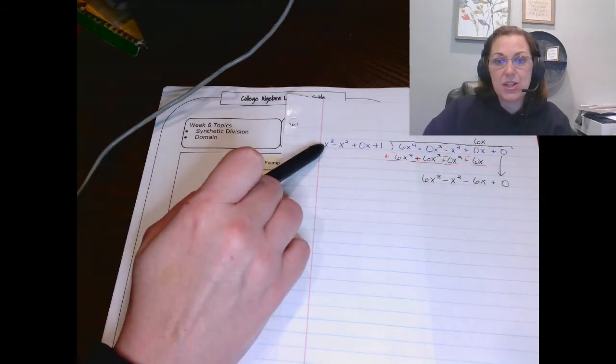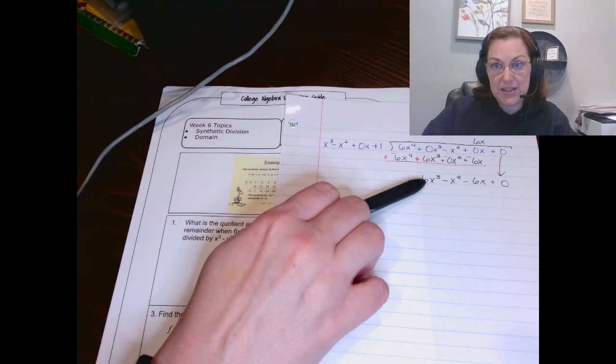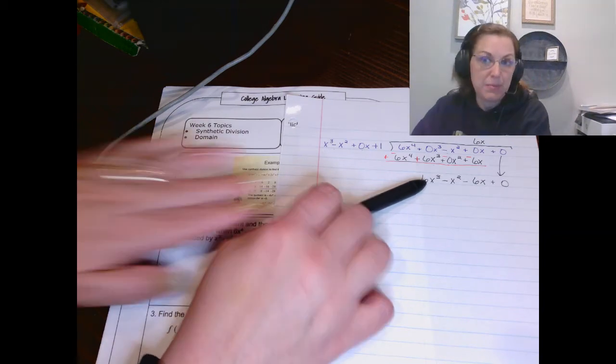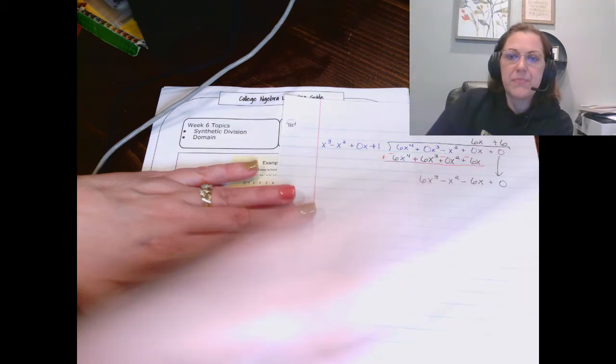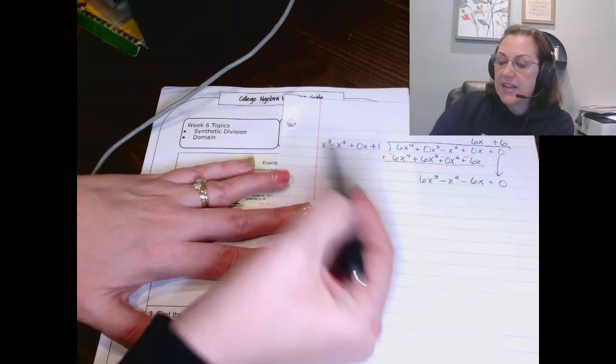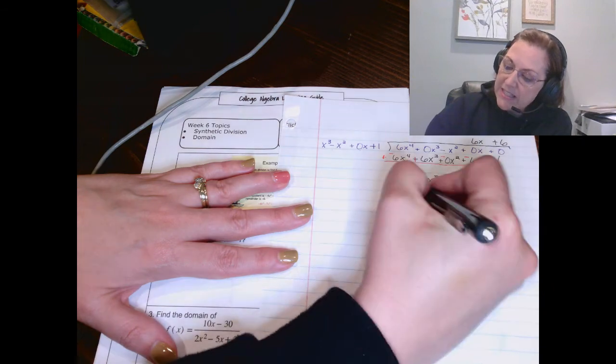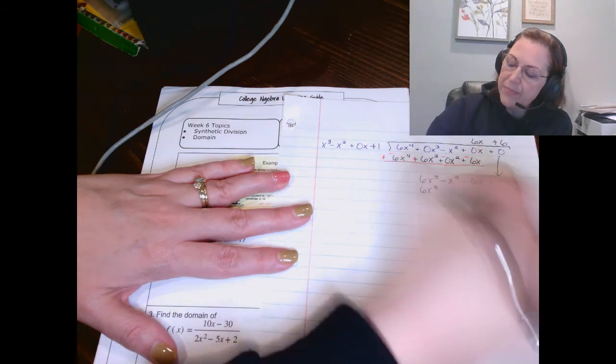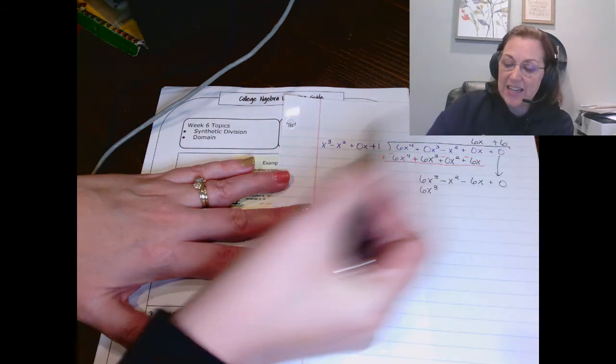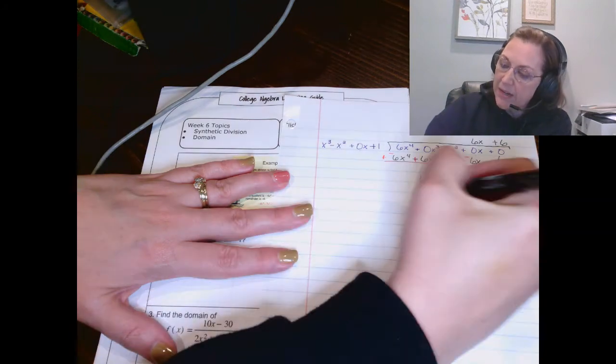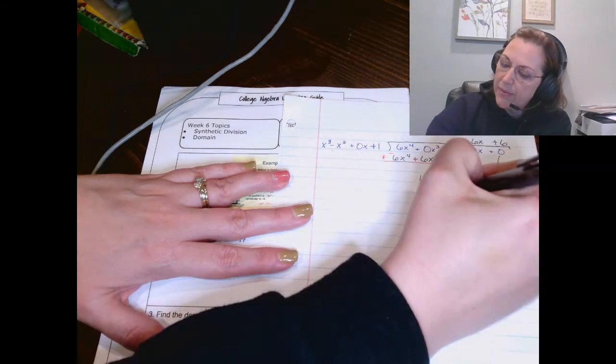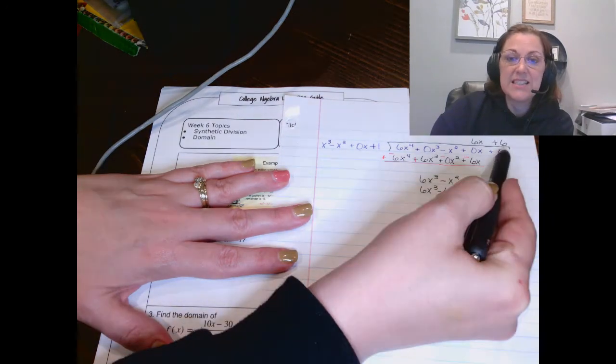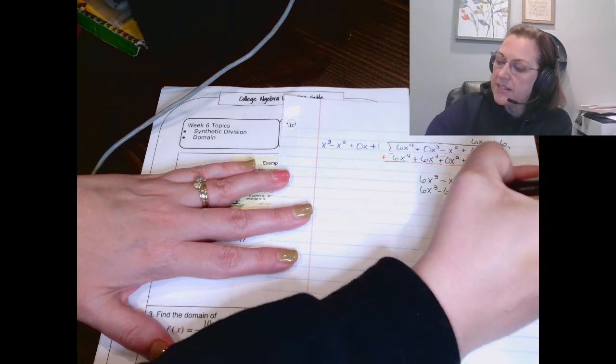What times X to the third would give you 6X cubed? That would be 6. So we're going to line it up over the constant term. Now we multiply. 6 times X cubed gives me 6X cubed. 6 times negative X squared gives me negative 6X squared. 6 times 0X is 0X. And 6 times 1 is 6.